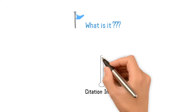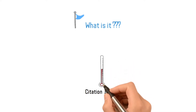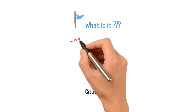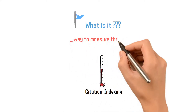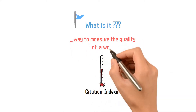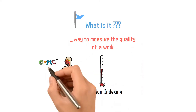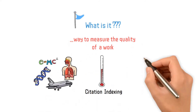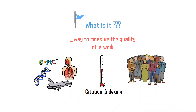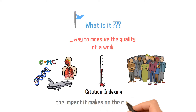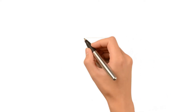Typically, it's a way to measure the quality of research work. This is done through the measure of the impact it makes on the community at large. Generally speaking, SCI stands for Science Citation Index.